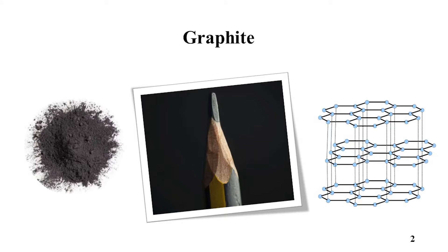Graphite is dark and soft, and it is what your pencils are made of. In graphite, the carbon atoms are arranged in perfect layers. Each layer is composed of hexagons, just like a chicken wire.